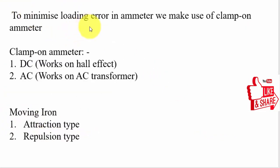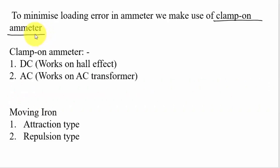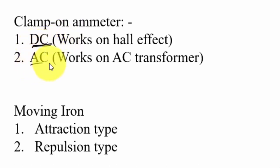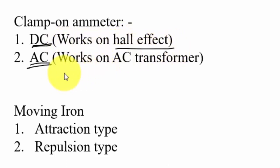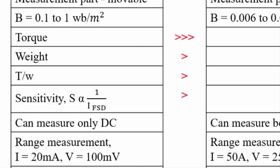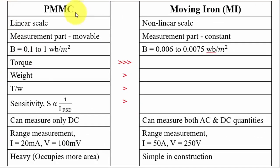To minimize loading error, in the case of ammeters we use a clamp-on ammeter — there is no physical connection to measure current. Clamp-on ammeter can measure both DC and AC quantities. For DC measurement it uses the Hall effect; for AC measurement it works on AC transformer principle. Moving iron instruments have two types: attraction type and repulsion type.